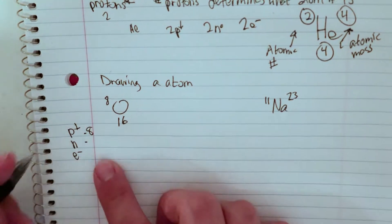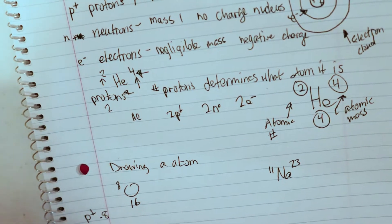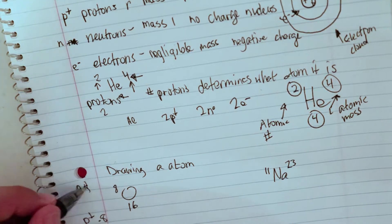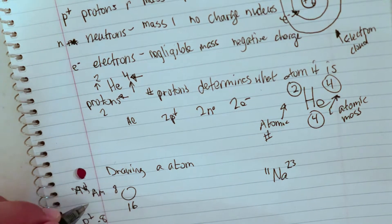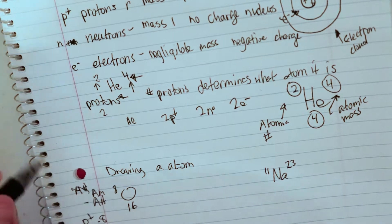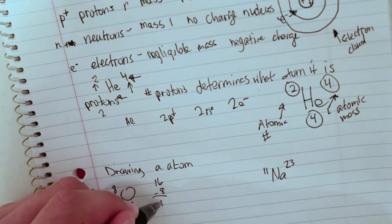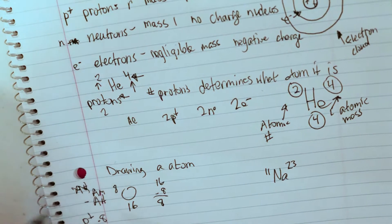Neutrons. To find the number of neutrons, I'm going to take the atomic mass and subtract out the atomic number. So 16 minus 8 equals 8, so I have 8 neutrons.